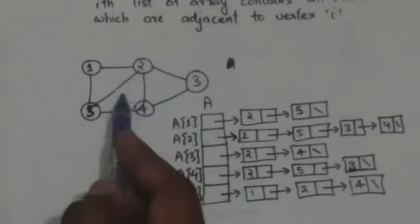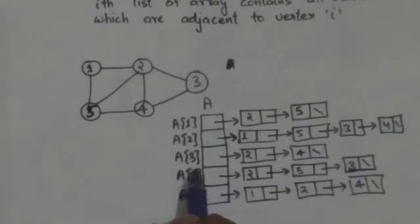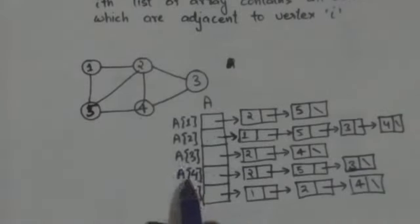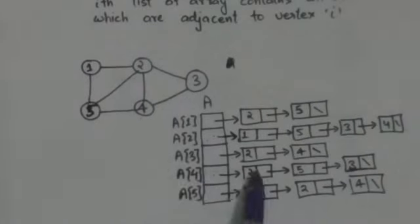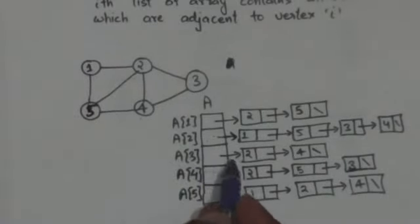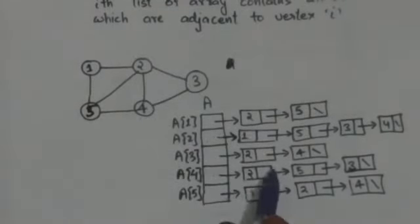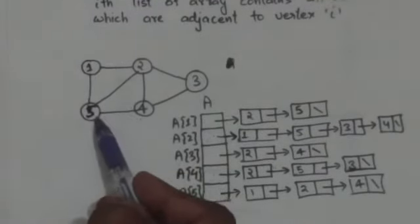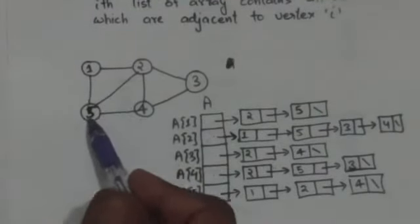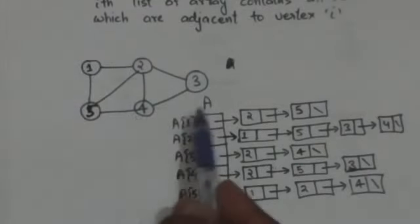Now see vertex 4 of this graph. Vertices 2, 3, and 5 are adjacent to vertex 4. So A4, that is the fourth element of array A, represents the linked list of vertices which are adjacent to vertex 4. This linked list contains the vertices 2, 3, and 5.